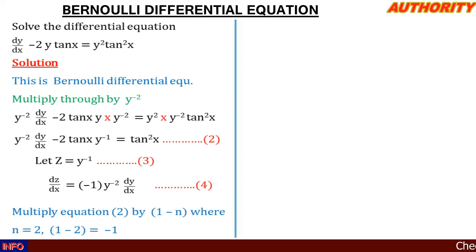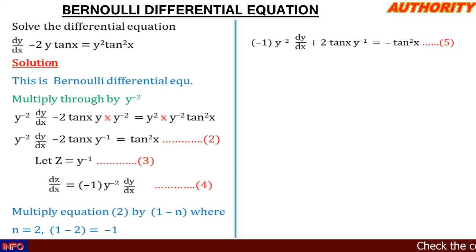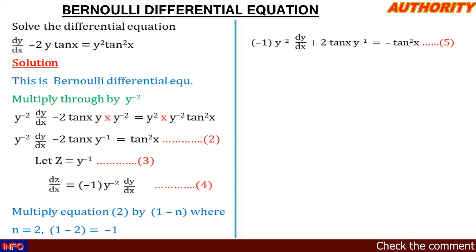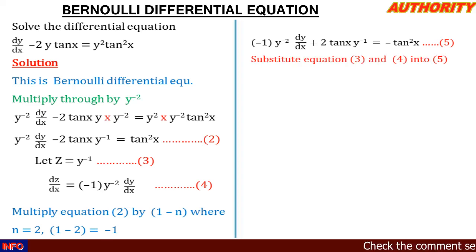We multiply equation 2 by (1 minus n), where n is the power of y on the right-hand side, which is 2. So 1 minus 2 equals minus 1. Multiplying through by minus 1: we get dz/dx — replacing minus y⁻²·(dy/dx) — plus 2·tan(x)·y⁻¹ equals minus tan²(x). We call this equation 5.